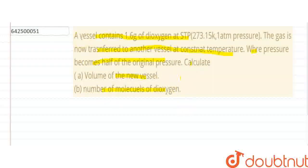So, in order to calculate the volume of the new vessel, first of all, let us calculate the volume in the first vessel itself. And then, using Boyle's law, we will calculate for the new vessel. So, let me write what has been given to us.